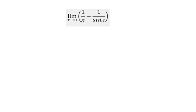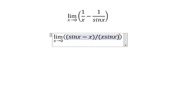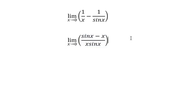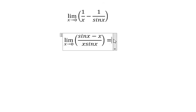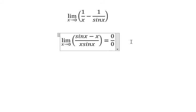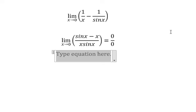We need to find a common denominator, which is x sinx, so we get sinx minus x over x sinx. Because when we put 0 into x sinx and x we get zero over zero, so in this situation you can use L'Hospital.